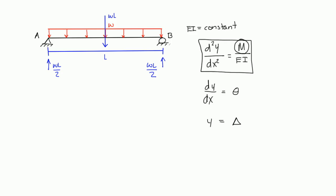The double integration method states that we need to find a moment equation to plug into the governing equation, and we can integrate it once to get the slope and integrate it twice to get the deflection. That means we need to find the equation of the internal moment along this span. The best way to do that is to take a cut anywhere along this span, since the loading doesn't change.